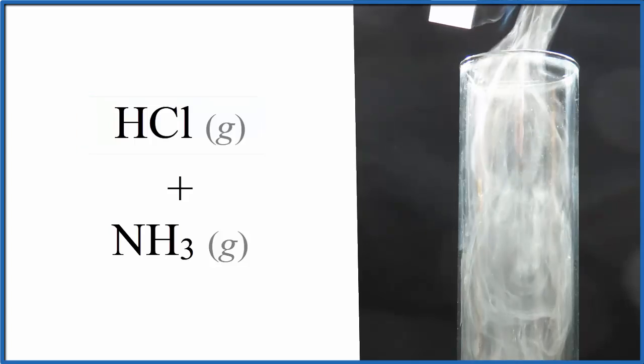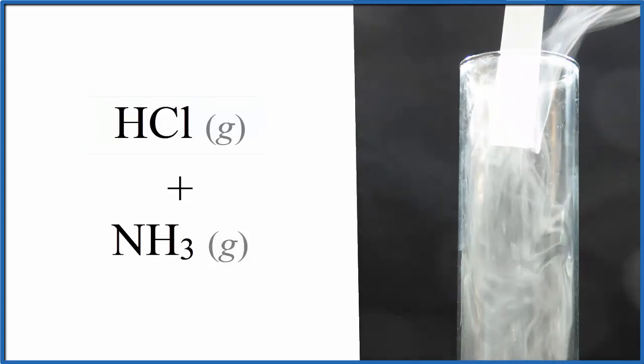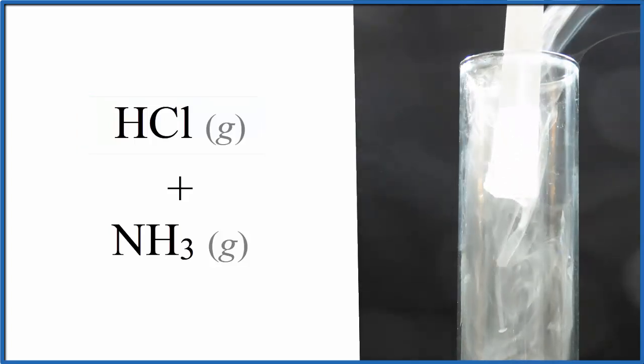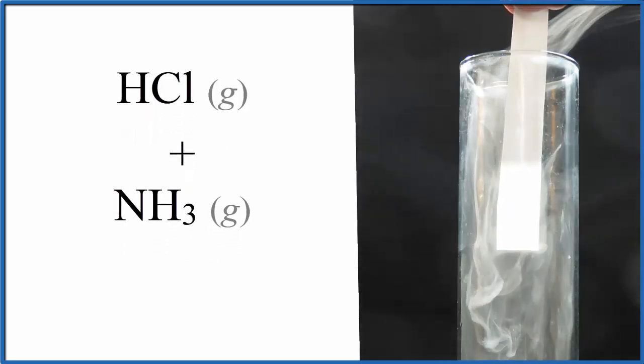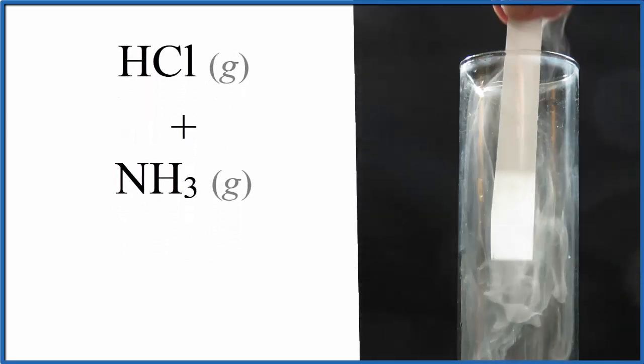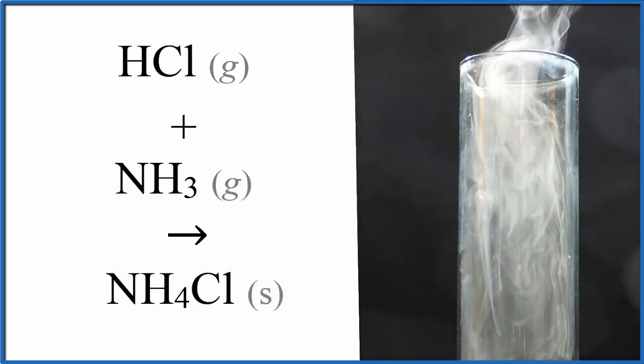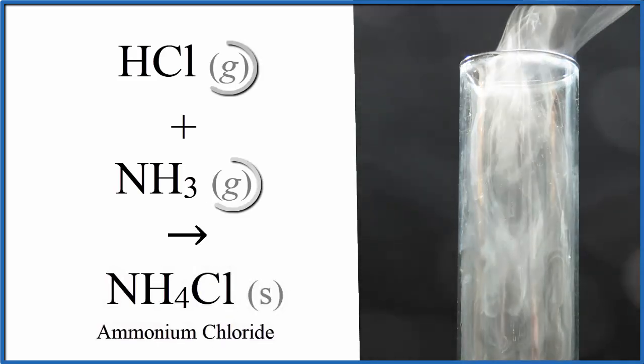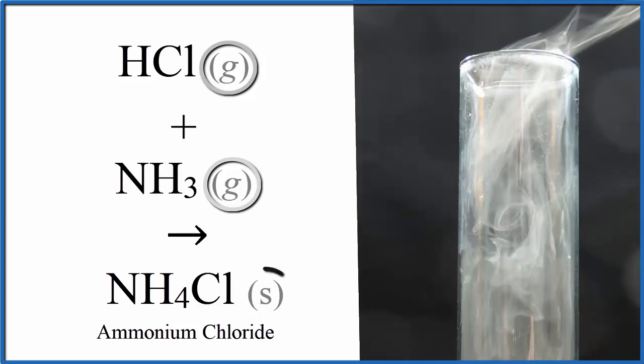So immediately when those two gases hit each other, they start mixing, we see this white smoke-like substance. That smoke-like substance, that's a solid. It's very small crystals of what we call ammonium chloride. So the two clear gases, they've come together and they've made this solid.